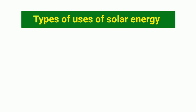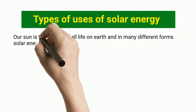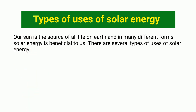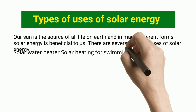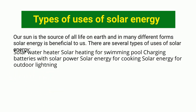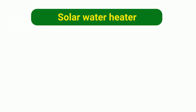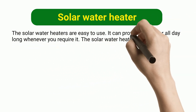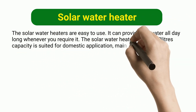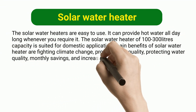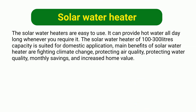Types of uses of solar energy: the sun is the source of all life on earth, and solar energy is beneficial to us in many forms. Uses include: solar water heater, solar heating for swimming pools, charging batteries with solar power, solar energy for cooking, and solar energy for outdoor lighting. Solar water heaters are easy to use and can provide hot water all day. A 100–300 liter capacity solar water heater is suited for domestic application, with benefits including fighting climate change, protecting air and water quality, monthly savings, and increased home value.